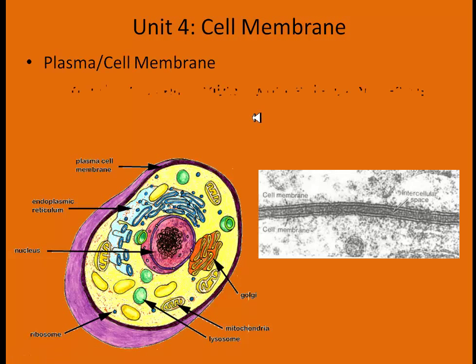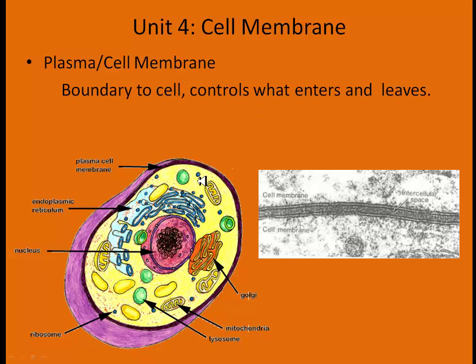The cell membrane, or plasma membrane, is the boundary of the cell. It controls whatever enters and leaves, letting the cell reach homeostasis. If it needs water, water comes in; if it needs salt, salt goes in; if it doesn't need salt, salt gets pumped out. It is selectively permeable — only letting certain things in passively, and actively using ATP produced by mitochondria to transport against the concentration gradient.